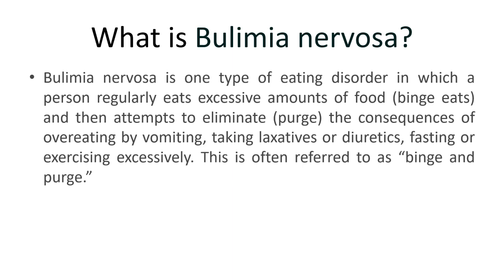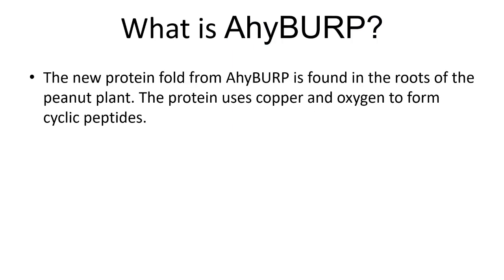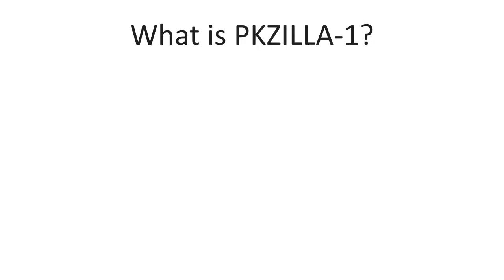What is HYBURP? The new protein formed from HYBURP is found in the roots of the peanut. The protein uses copper and oxygen to form cyclic peptides.